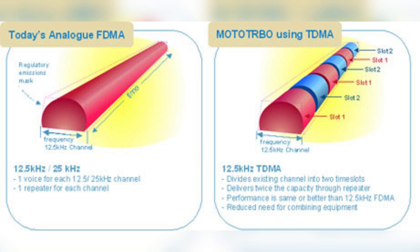Radios assigned to time slot one transmit and receive during that 30-millisecond interval, and radios assigned to time slot two use the other 30-millisecond interval. This means you get two channels on one frequency — as a DMR repeater owner you can support two simultaneous conversations while only acquiring one transmitter and one receiver. DMR also uses color codes to select which repeater you are trying to access, so if two repeaters overlap in coverage they are given a unique color code to avoid interference, similar to a PL tone on the analog side.